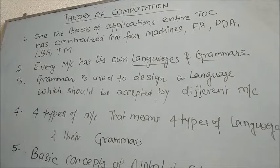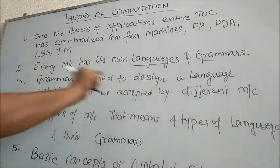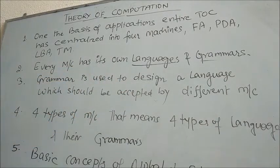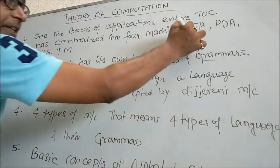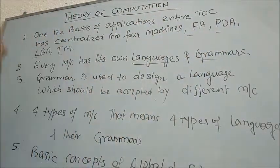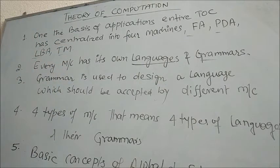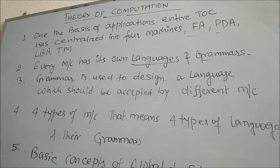Grammar is used to design the language which should be accepted by different machines. What are the different machines? That is FA, PDA, LBA, and TM. For these four different machines we have different grammars, and if we have different grammars, certainly we will design different types of languages.